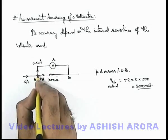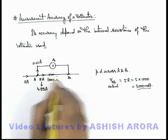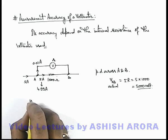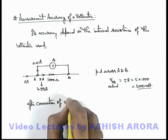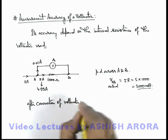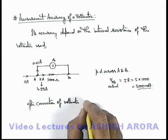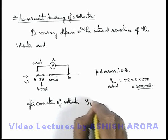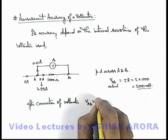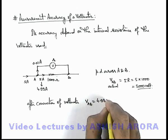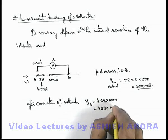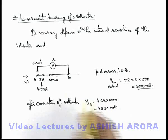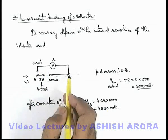So the voltmeter is going to measure the potential difference across terminals A and B. After connection of the voltmeter, V_ab equals I times R, which is 4.99 multiplied by 1000, giving 4990 volts. We can see that depending on the resistance of the voltmeter, the value of potential difference being measured is reduced from the actual value of 5000 volts.